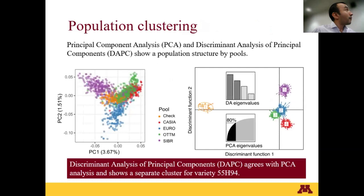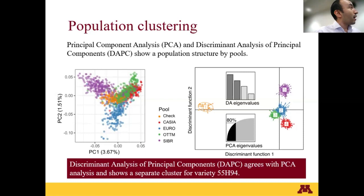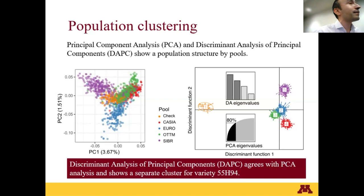Finally, we checked the population structure and clustering using principal component analysis and discriminant analysis of principal components. In the PCA, we see a clear pattern for Siberia (the purple cluster), Ottoman, Cassia, and Chiro in the lower part of the PCA. The check varieties are clustering in the center. The results are similar with discriminant analysis of principal components, but interestingly, we can identify an extra cluster — cluster number one — which corresponds exclusively to the variety 55H94, which was completely separated from the rest of the varieties.